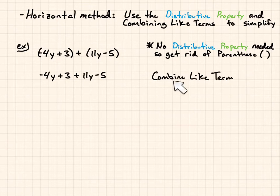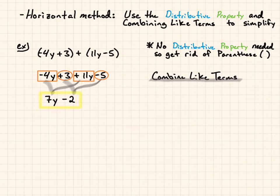And then I can combine like terms. So my like terms here are negative 4y and positive 11y. And then also 3 and negative 5. So when I combine those like terms, I get 7y because negative 4 plus 11 is 7. And then 3 plus negative 5 gives me negative 2. So my answer is I can simplify this to being 7y minus 2.